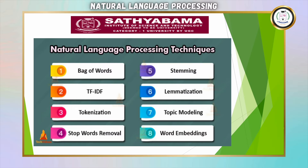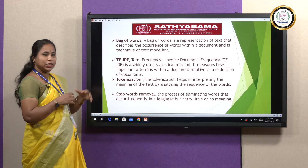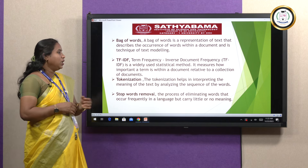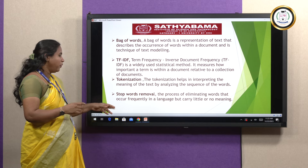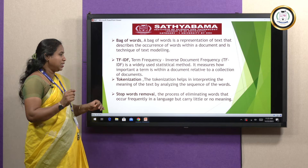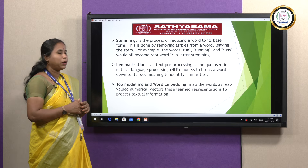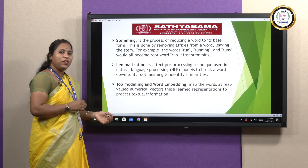Natural language processing mainly involves these techniques: bag of words, which consists of a huge volume of data to be processed; TF-IDF (term frequency–inverse document frequency), a statistical model to find important terms in a document; tokenization, which converts sentences into tokens; stop words removal, which removes unimportant words from a sentence; stemming, the process of reducing word length; lemmatization, a text preprocessing technique; topic modeling; and word embedding, which maps words to numerical data.